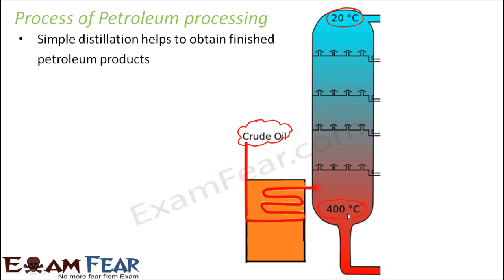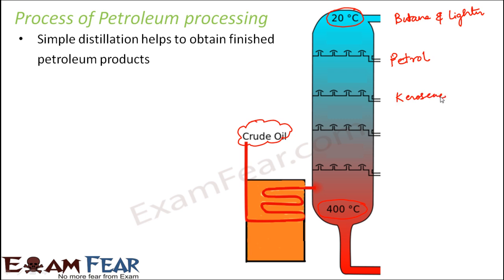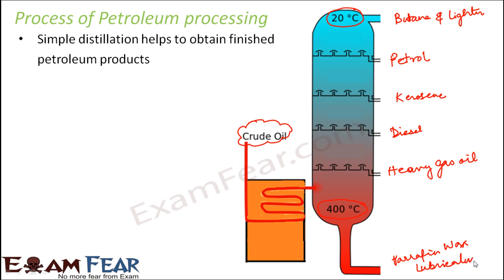Some products may even reach temperatures as high as 1000 degrees Fahrenheit. So the topmost layer — the lowest temperature zone — is occupied by gas, the lighter gases like butane and other light components. The next section is petrol or gasoline. Below that comes kerosene, then diesel or light gas oil, then heavy gas oil. At the very bottom, at the highest temperatures, you get paraffin wax, lubricating oil, and others.